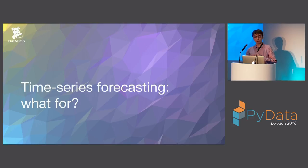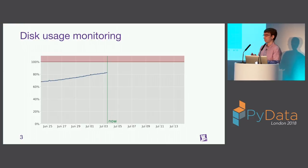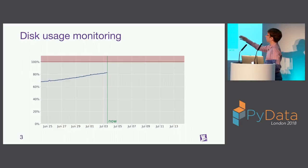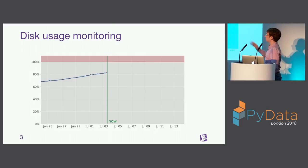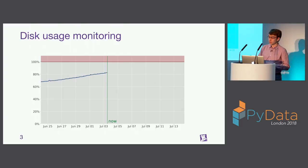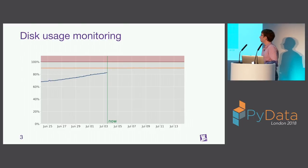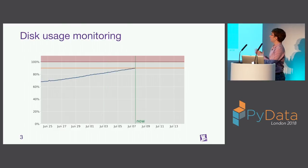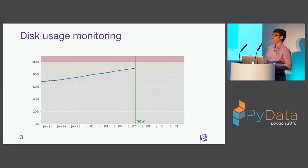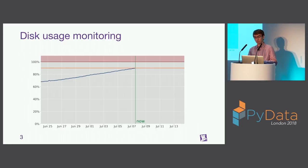Let's focus on a few use cases for which we need time series forecasting. Here's a concrete example: monitoring the disk usage of one of my servers. The disk usage is currently about 83% and it's clearly slightly increasing. At some point, if it stays with the same trend, it's going to reach 100%. To get notified before that happens, you can set a threshold at 90%, and whenever the metric reaches that threshold, you get notified.